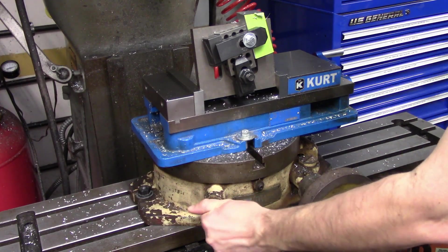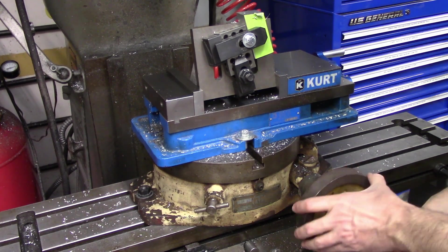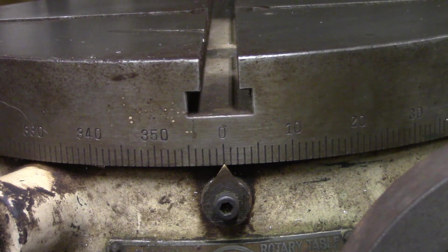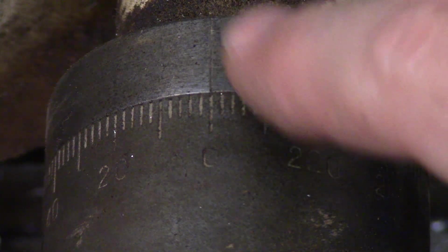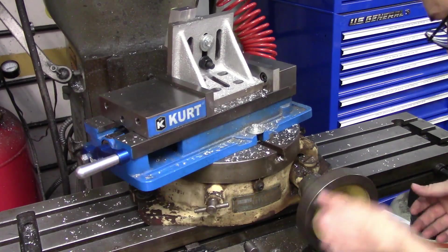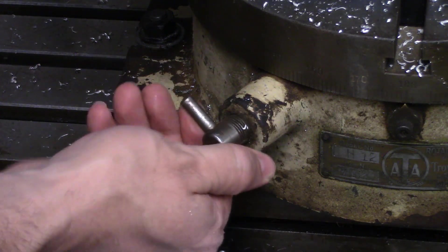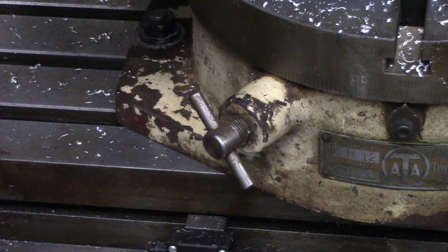Once I have the first hole drilled, I have to spin it around by 180 degrees for the second hole. There are degree markings on the table itself and minute markings on the handle. I just have to crank the handle an obscene number of times to shift it all the way around. Again I'm locking my rotary table down to make sure nothing moves on me while drilling.